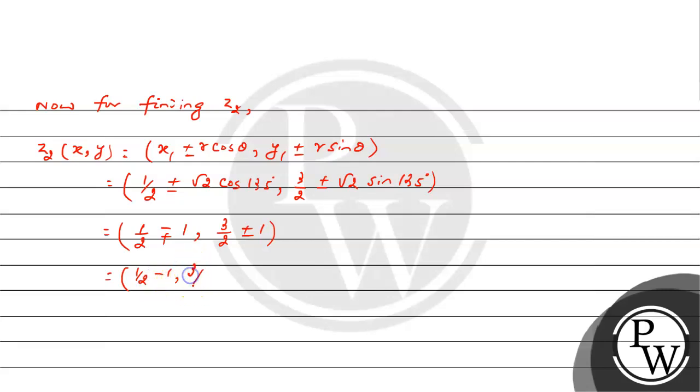The coordinates are (1/2 - 1, 3/2 + 1) or (1/2 + 1, 3/2 - 1). Thus we can write z2 as (-1/2, 5/2) or (3/2, 1/2). Now this z2 in complex number form is -1/2 + 5i/2 or 3/2 + i/2.